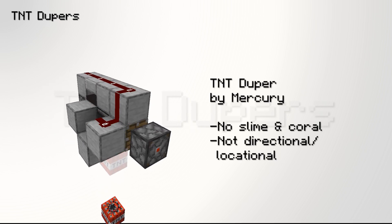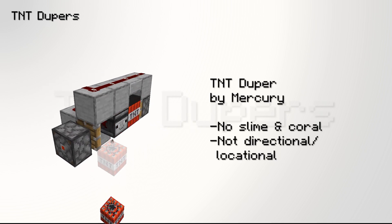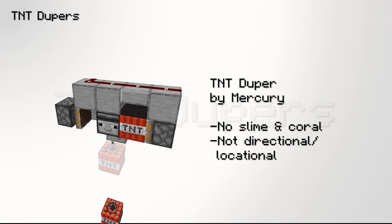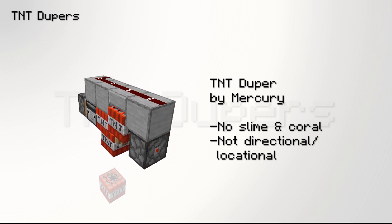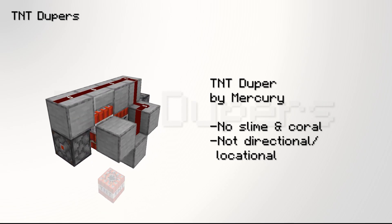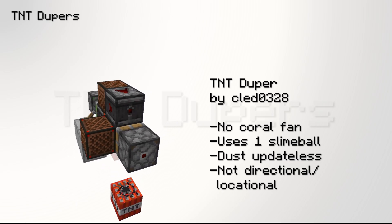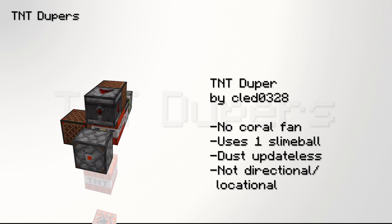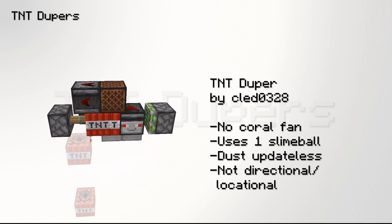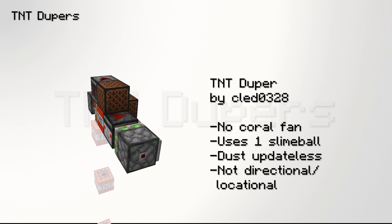The first TNT duper is designed by Mercury. It uses one observer and does not use any slime. The second duper is designed by Kled0328. It uses one slime ball, but it is dust updateless.